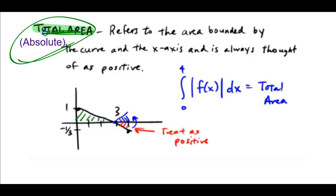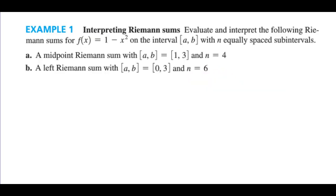If they ask for total area, that's cueing you into needing to take the absolute value. There is no negative, so think about flipping that region over and you can just rectify it by putting absolute value bars, making sure your answers are always positive. The first example we're going to talk about is similar to section 5.1, which is why you should watch it.